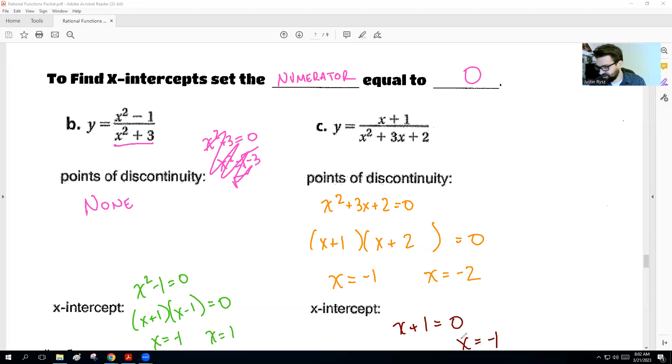Now, our x-intercept, we set the top equal to 0. And that would be x equals negative 1. Now, here is a catch. This is rare, and we have a good example here. If the x-intercept is actually a discontinuous point, it means that that x-intercept does not exist. We would actually, since that's the only one, we would actually say here that there are none, that there's no x-intercepts, because that is a hole that gets canceled out. An x-intercept needs to be a point, not a hole.